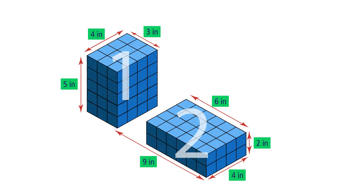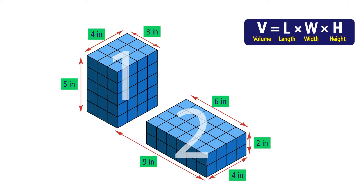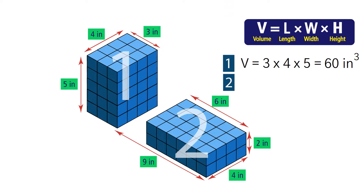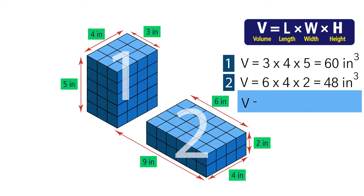Now we can find the volume of each prism using the formula: volume equals length times width times height. The volume of prism 1 is 3 times 4 times 5, which equals 60 inches cubed. The volume of prism 2 is 6 times 4 times 2, which equals 48 inches cubed. To find the volume of the composite figure, we add the two volumes: 60 plus 48 equals 108 inches cubed. So the volume of the original figure is 108 inches cubed.